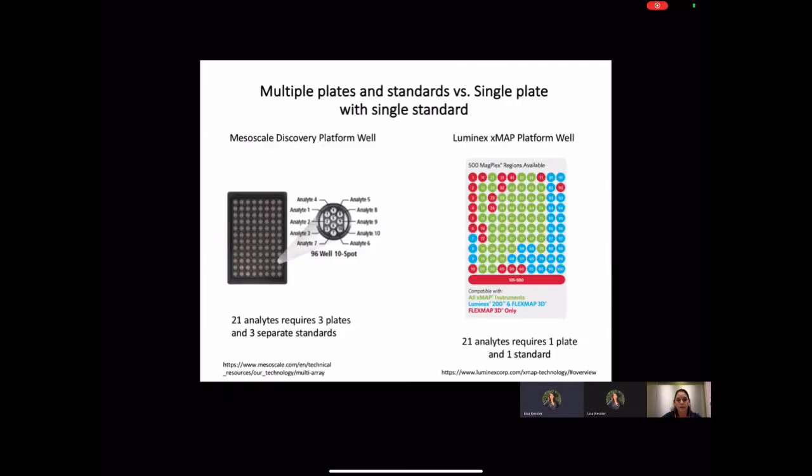The illustration on the left is of the mesoscale discovery or MSD V-Plex assay that requires three plates having wells printed with either three, eight, or 10 capture antibodies in order to assess all 21 analytes. The plates are lyophilized, so you just need to add your diluted sample or your standard and start incubating on an orbital shaker.